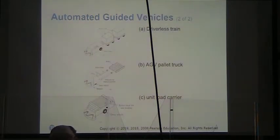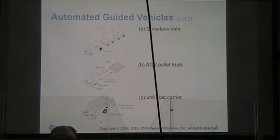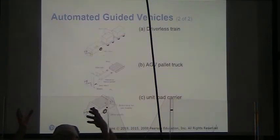I worked in a facility where workers, when they felt they were getting too many deliveries, would put a cup over the sensor so it would read the station as busy and the AGVs would start backing up. Here we have a driverless train with a safety bumper at the front — if it runs into something, it stops the AGV. We have an AGV pallet truck, also with a bumper. And a unit load carrier with a roller deck for side loading.